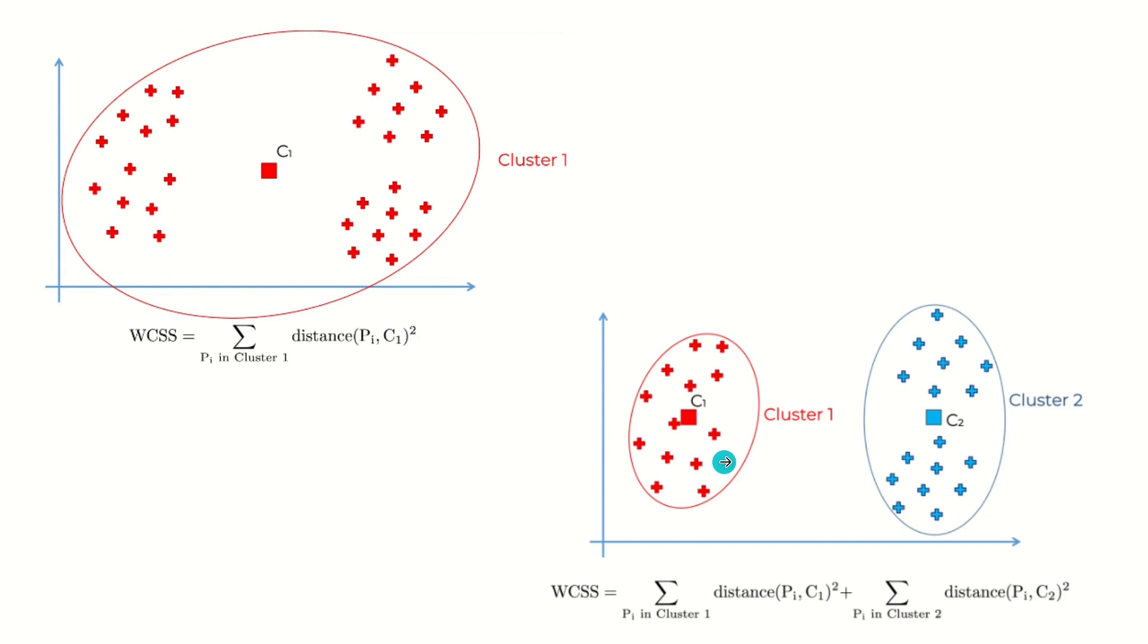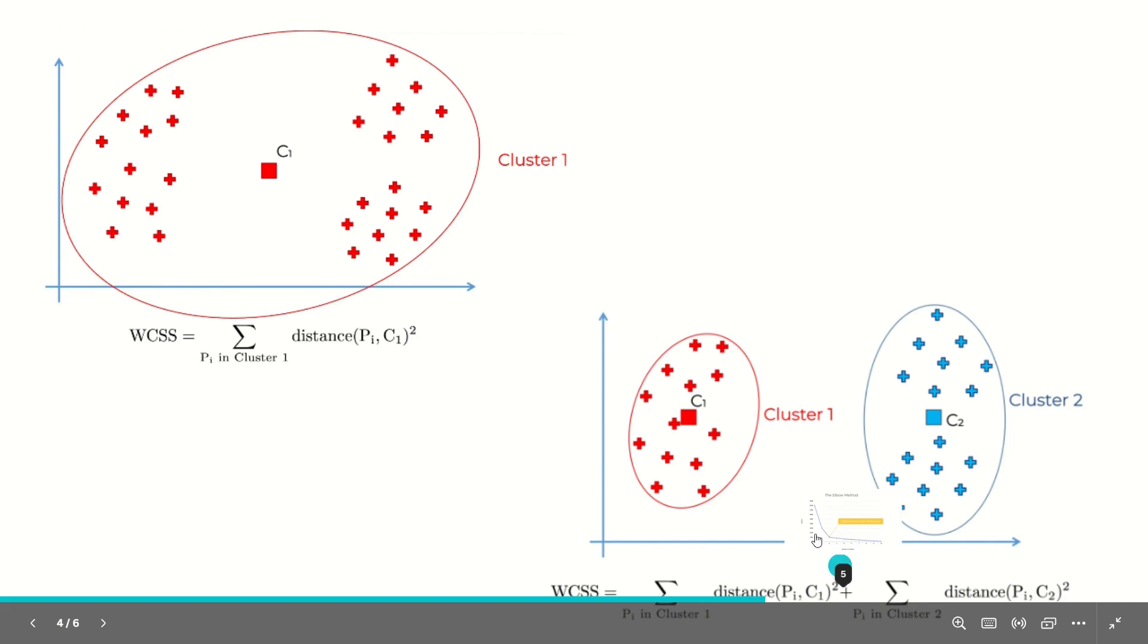For this example, we have two clusters available and we have to repeat the same process for both clusters. That's why you can see there's a plus sign, and then we get the WCSS.